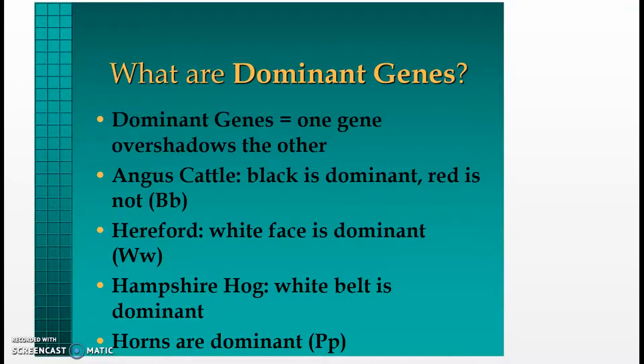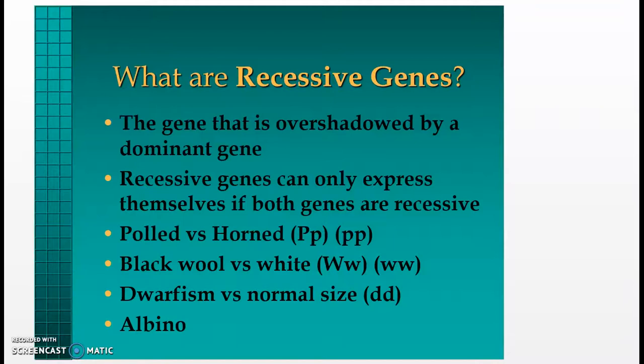In Hampshire hogs, the white belt is dominant. Horns are always dominant, so in polled and non-polled animals, an uppercase P and a lowercase p still represents a horned animal.